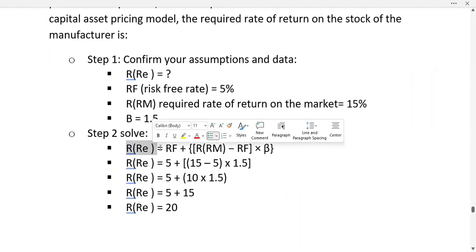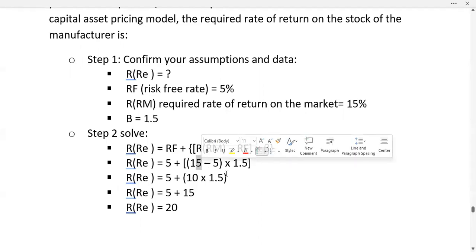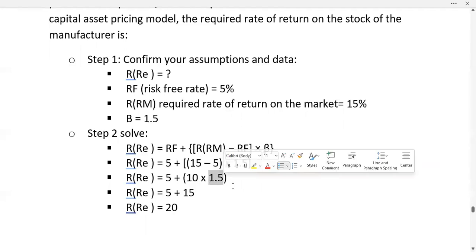R(Re) equals RF plus all of this. So your R(RM) is 15, your RF is 5, multiplied by 1.5. You get 5 plus 10 times 1.5, which equals 5 plus 15, equals 20%.